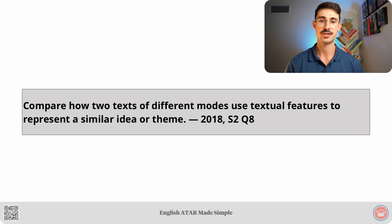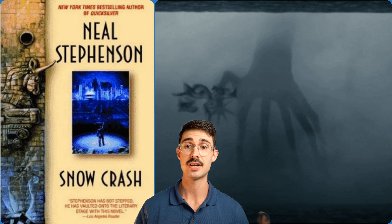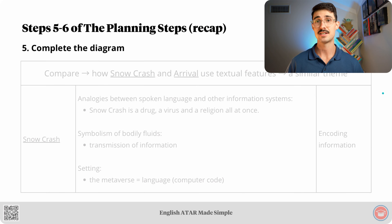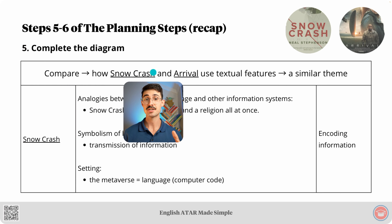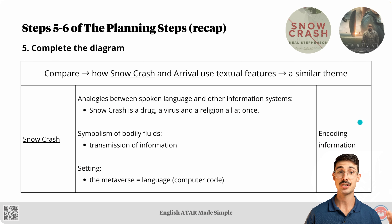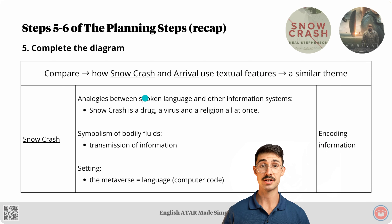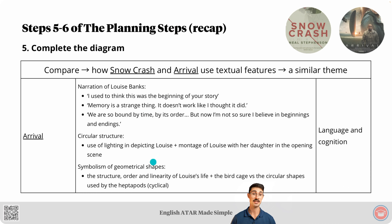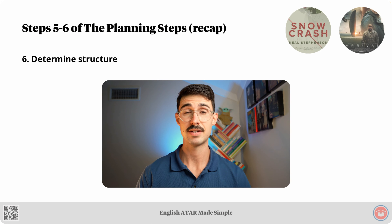Now let's take a look at our third and final example. The relevant question is: compare how two texts of different modes use textual features to represent a similar idea or theme. The two texts we're comparing are Snow Crash and Arrival — the first is a book and the second is a movie. Here's a recap of steps five and six of the planning steps. Starting with step five — complete the diagram. This question required us to compare how Snow Crash and Arrival use textual features to represent a similar theme. Snow Crash represents a theme of encoding information using analogies between spoken language and other information systems, the symbolism of bodily fluids, and the setting.